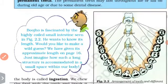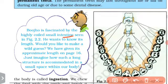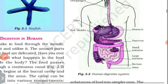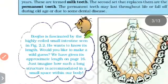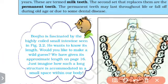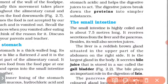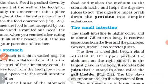Goji Bojo is fascinated by the highly coiled small intestine seen in figure 2.2. He wants to know its length. The approximate length is given on page 16. The small intestine is 7.5 metres long.